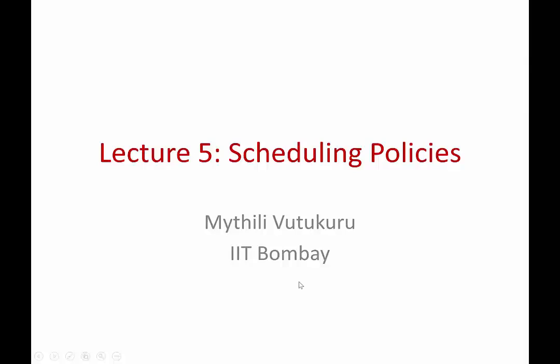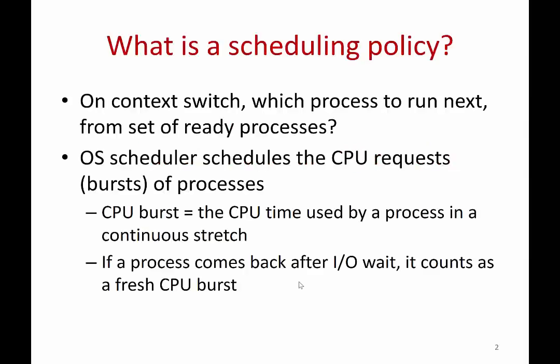In this lecture, we're going to study various operating system scheduling policies. A scheduling policy is the piece of code that basically decides which process to run next. Once you've decided you need to context switch, which of the many ready processes should run next?